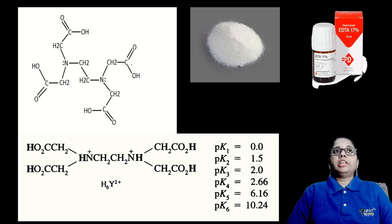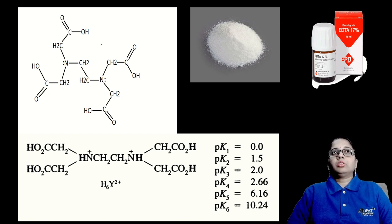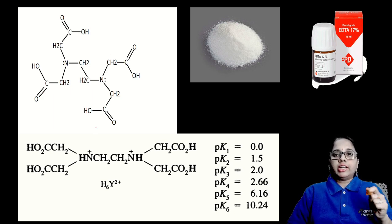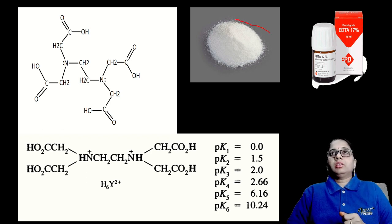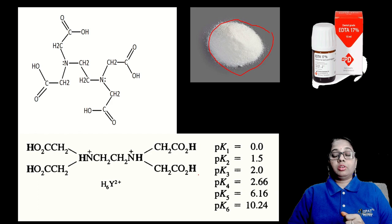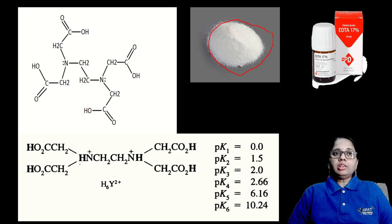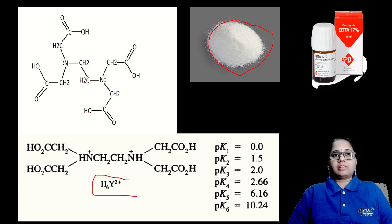Simple titration methods are used to determine metal ions present in water. Complexometric titration is used to determine the exact number of metal ions in a sample, and is highly useful for determining the hardness of water — including heavy metals in tap water. For that purpose, EDTA is used as the complexing agent. EDTA is available in white crystalline powder form.